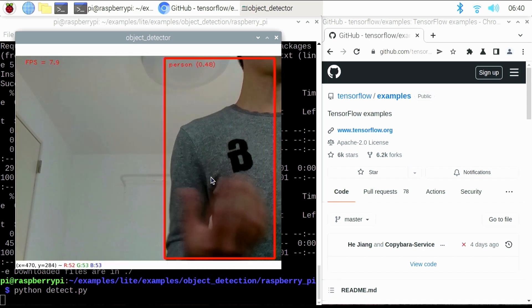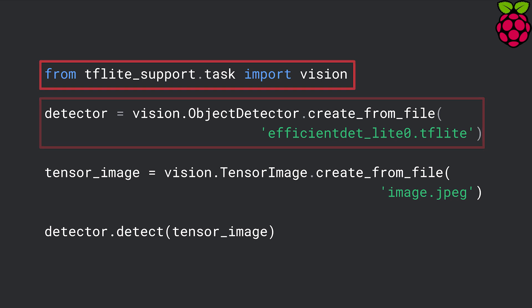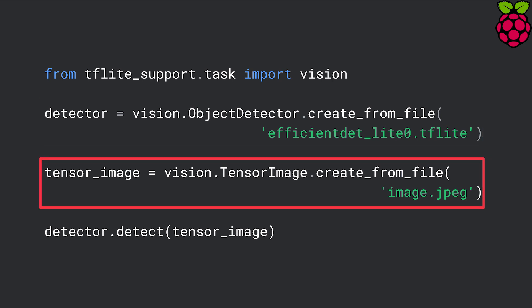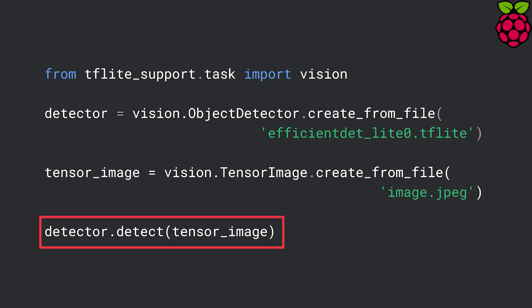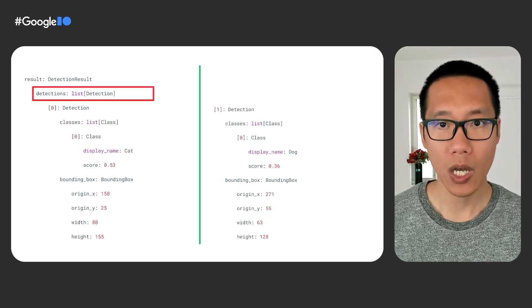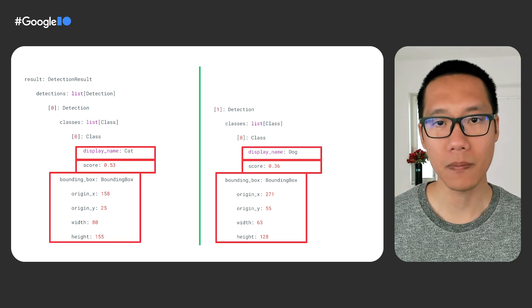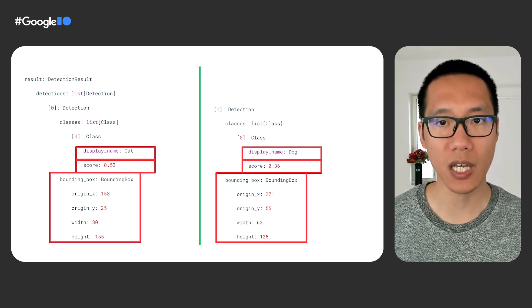Now let me show you how to implement this demo. It's very similar to the audio classification program we created earlier. We start by downloading the model from TensorFlow Hub and using the TensorFlow Lite task library to run it. We import the vision module from the task library, then initialize an object detector with the TensorFlow Lite model. You need to prepare a tensor image to feed the input image to the object detector. You can load an image directly from a file using the fromImage function, then call the detect function with the tensor image. The detect function gives you a list of detection objects, each with an object name, a confidence score, and a bounding box indicating the object location.